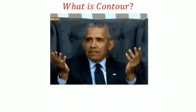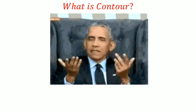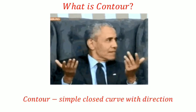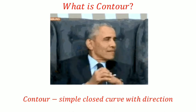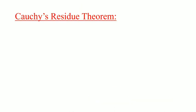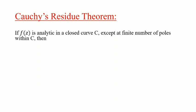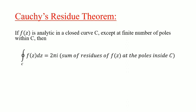A contour is a simple closed curve with direction. Cauchy's residue theorem states that if f(z) is an analytic function in a closed curve C except at a finite number of poles within C, then the integral over C of f(z) dz equals 2πi times the sum of residues of f(z) at the poles inside C.